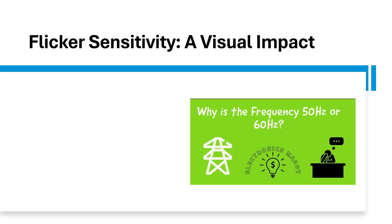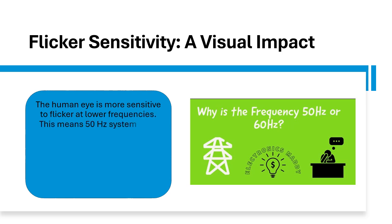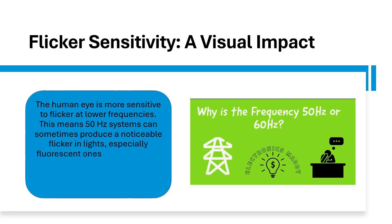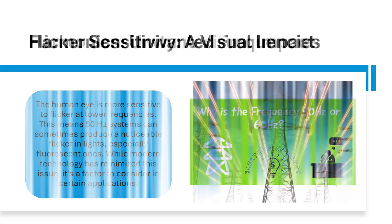Flicker sensitivity — a visual impact. The human eye is more sensitive to flicker at lower frequencies. This means 50 Hz systems can sometimes produce a noticeable flicker in lights, especially fluorescent ones. While modern technology has minimized this issue, it's a factor to consider in certain applications.